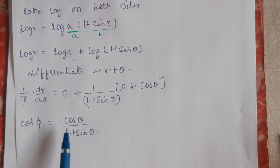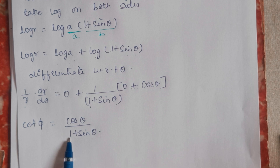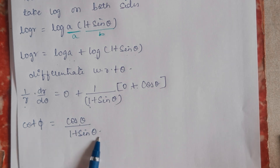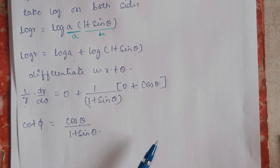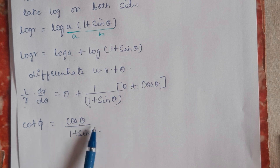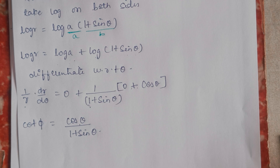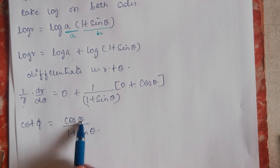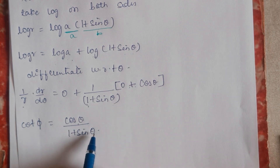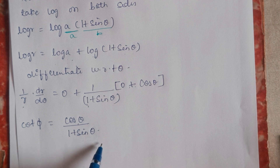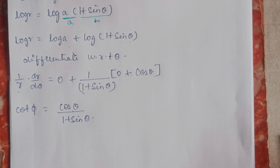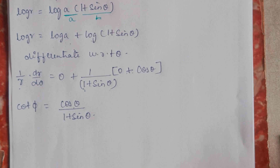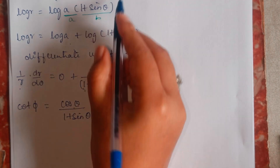We have two ways of solving this. One is the traditional way using trigonometric formulas for cos θ and sin θ, but that will be a long procedure. The other way is to directly substitute θ = π/2. I will first show the shortcut method by directly applying θ = π/2. If you prefer the long method, I will show that as well — both are valid.